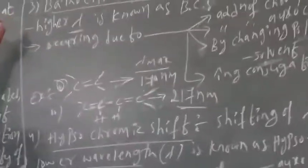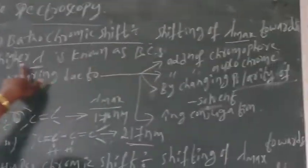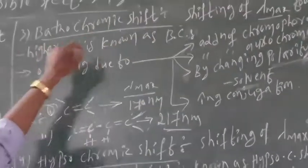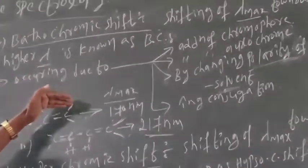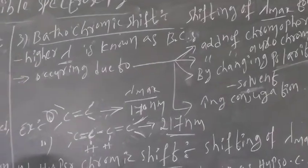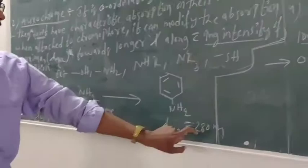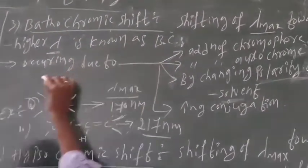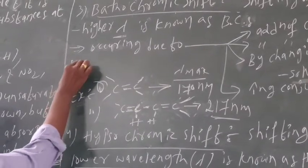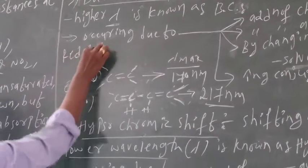Next: bathochromic shift. Bathochromic shift is the shifting of lambda max towards a higher wavelength. Bathochromic shift is also known as red shift. When lambda max increases towards higher wavelength, it is called bathochromic shift or red shift.